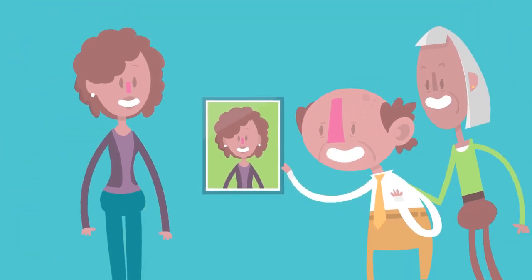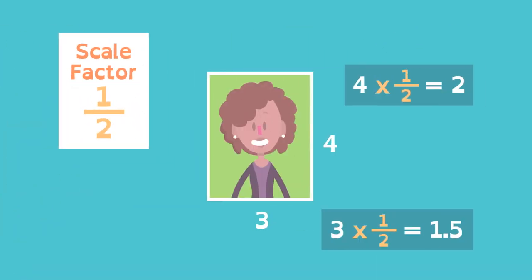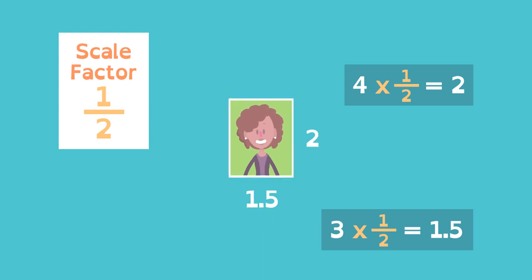Nice portrait, Kate. Grandma and Grandpa are so proud. If the scale factor is 1 half, the original dimensions are multiplied by 1 half. The dimensions of the reduced photo are 1.5 and 2.